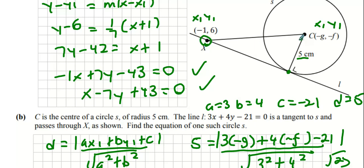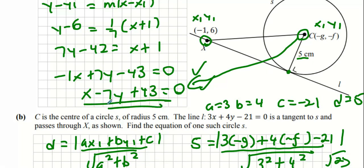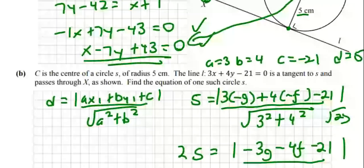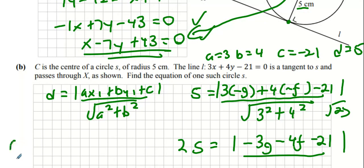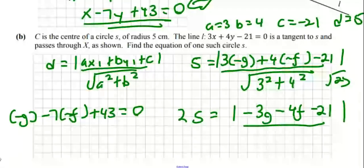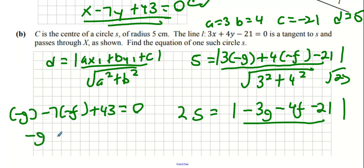From part A, X and C are on the line from that equation. If I replace x with minus g and y with minus f, it must balance. So substituting into minus x plus 7y plus 43 equals zero gives minus g plus 7f plus 43 equals zero.